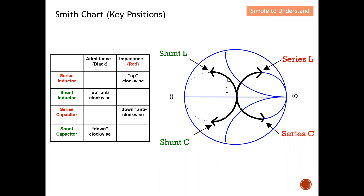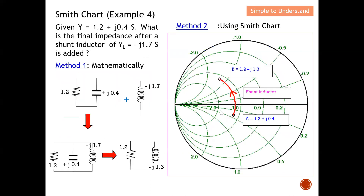Moving up and anti-clockwise is the effect of adding a shunt inductor. I need to move a total of 1.7. From the starting point to the resistivity line is 0.4, so after moving 0.4 I have 1.3 remaining. I move another 1.3 further, and this gives the resulting admittance value. Again, to get the impedance value, you simply compute 1 over (1.2 minus j1.3) to obtain the final impedance of these three elements combined.